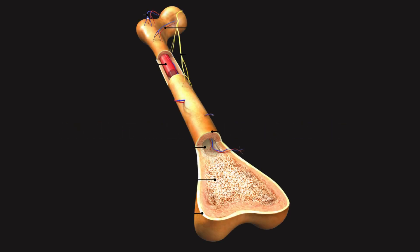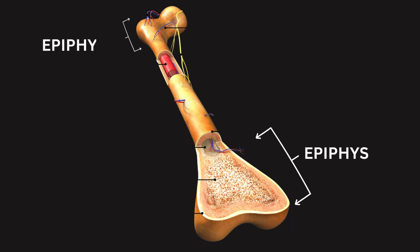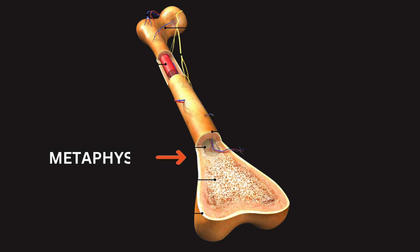Structures on long bones. Long bones, such as the femur and humerus, have several distinctive structures. 1. Diaphysis: the long, cylindrical shaft of the bone. 2. Epiphysis: the widened ends of a long bone. 3. Metaphysis: the region between the diaphysis and epiphysis, where growth occurs during development.